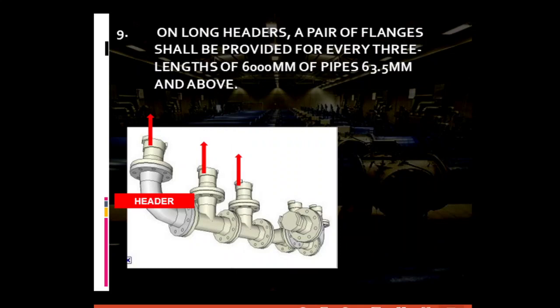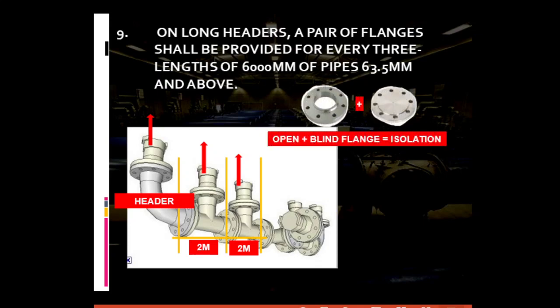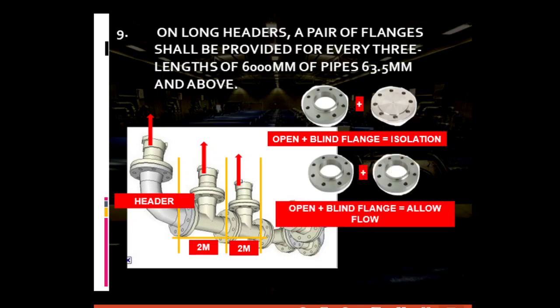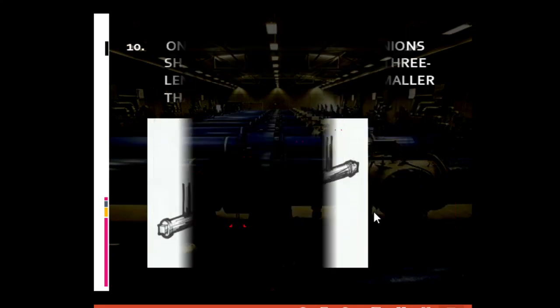For general piping requirement number nine: on long headers, a pair of flanges should be provided for every three lengths of 6,000 millimeters (6 meters) of pipes 63.5 mm and above. This allows shut-off or isolation of a malfunctioning pipeline, thus allowing continuous operation of the piping system without shutting down the whole system. For isolation, a pair of open flanges plus a blind flange is used. To allow fluid to flow, a pair of open flanges is used.